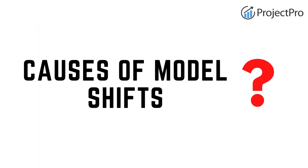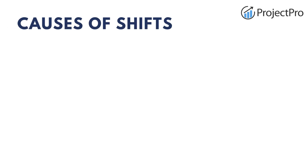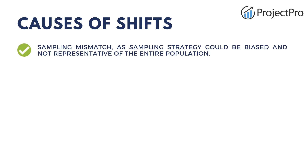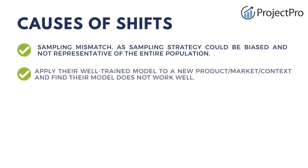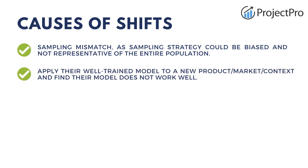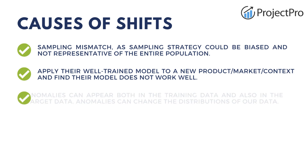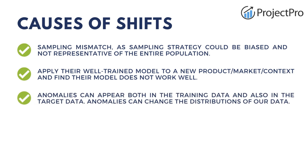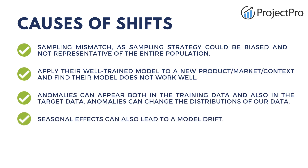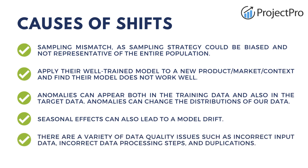The causes of these shifts include: sampling mismatch, where your sampling strategy could be biased toward one category, or applying a well-trained model to a new product it was not trained on, causing incorrect predictions. Anomalies in training and testing data can cause changes in data distributions. Seasonality effects can also lead to model drift, as discussed with recurring concept drift. Data quality issues are also a major cause, leading to incorrect data processing or data duplication. These are the main causes that make our model degrade over time or suddenly lose performance.